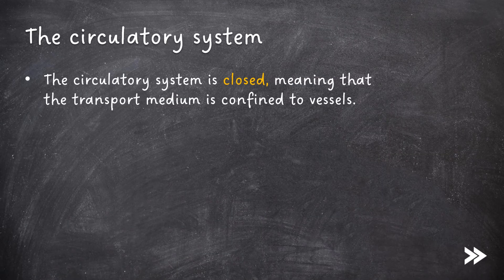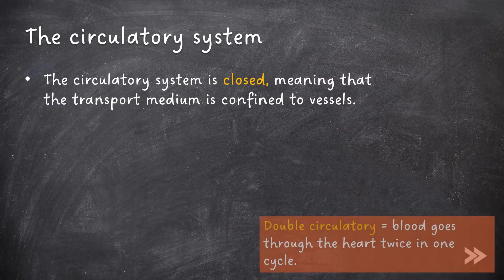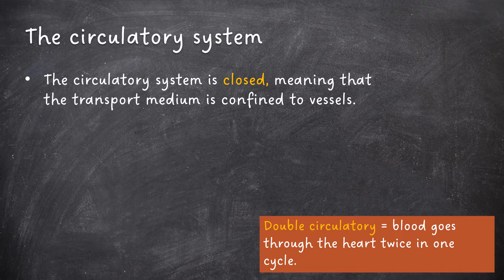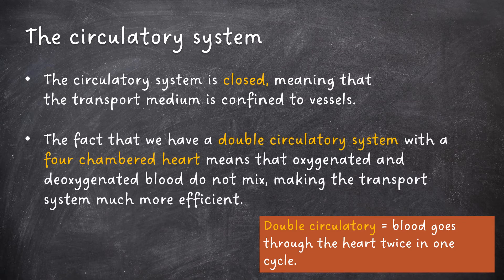The circulatory system is closed, meaning that the transport medium is confined to vessels. In the body we have something known as the double circulatory system, meaning that blood goes through the heart twice in one cycle. The fact that we have a double circulatory system with a four-chambered heart means that oxygenated and deoxygenated blood do not mix, making the transport system much more efficient.